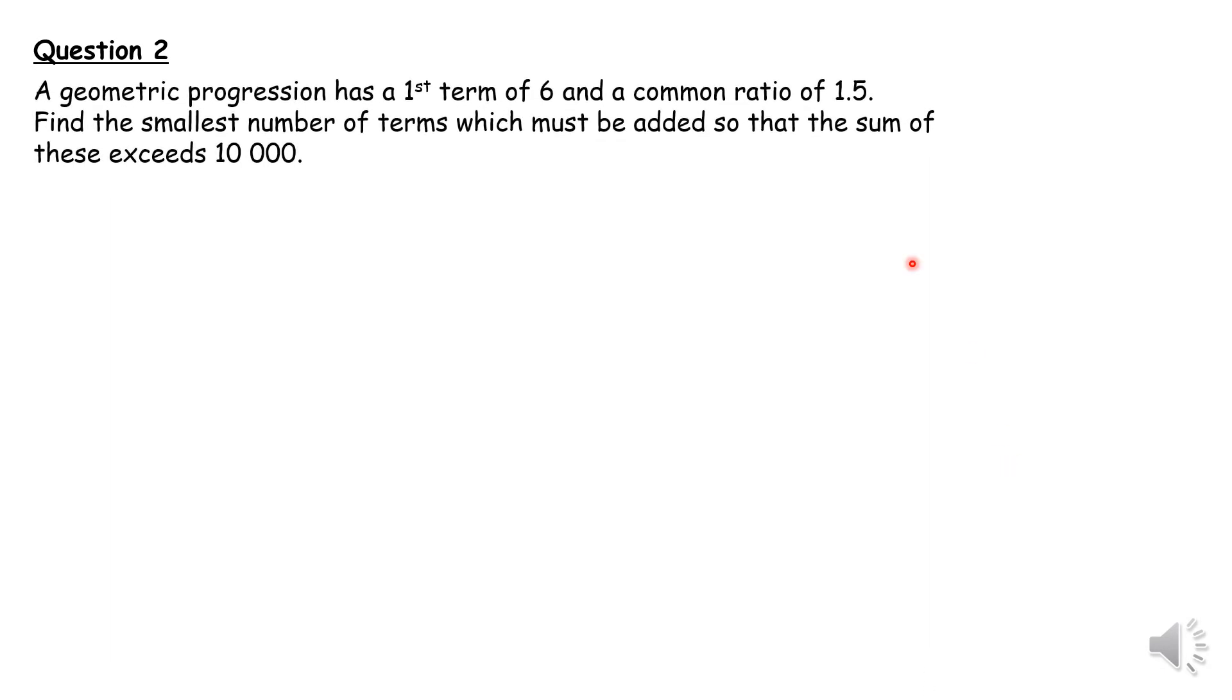Let's go to the second question. This is a GP. First term is 6, common ratio is 1.5. The sum, smallest number of terms which must be added, so added tells me I must use the sum S sub n, to exceed 10,000.